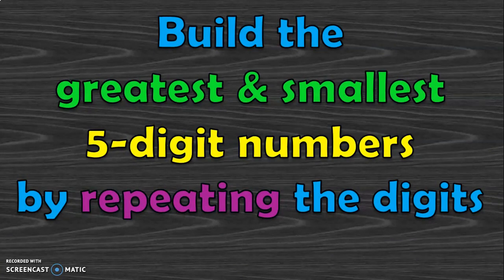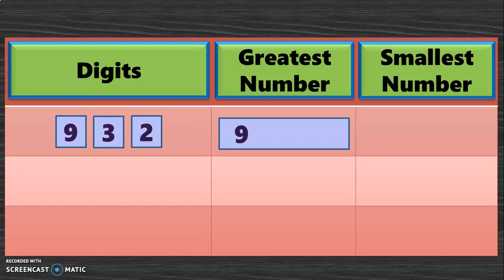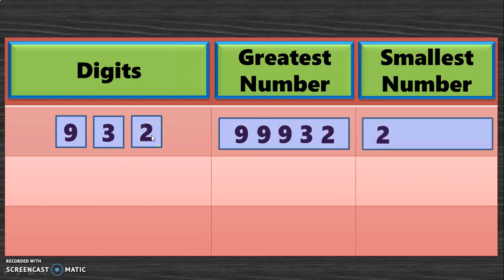Let us build the greatest and smallest 5-digit numbers by repeating the digits. Given 3 digits, to make a greatest 5-digit number we need 2 more digits. We repeat the biggest digit 9 two more times, then arrange the remaining digits from big to small: 3 and 2. This gives 99,932 as the biggest 5-digit number. For the smallest, repeat the smallest digit 2 two more times, then arrange remaining digits from small to big: giving 22,239.